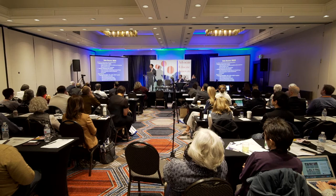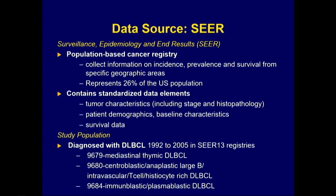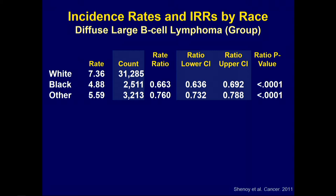But that turned out not to be true — outcomes in Georgia were actually worse than in the rest of the United States, in part related to the racial disparities I'll discuss. We started by looking at the SEER dataset — Surveillance, Epidemiology, and End Results — which represents about 26% of the US population. We found that DLBCL was much less common in black individuals, with about 2,500 cases over that time period compared to about 30,000 cases in white individuals.